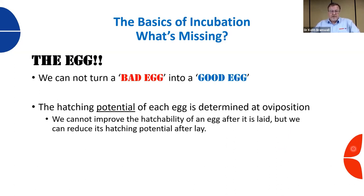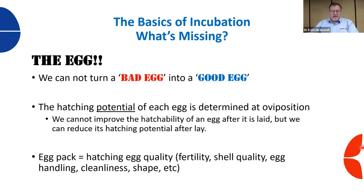The hatching potential of an egg is determined at oviposition, the time it is laid. We cannot improve the hatchability of an egg after it is laid - we can only reduce its hatching potential after lay by how we handle and care for those eggs. Egg pack is basically hatching egg quality - we're looking at cleanliness, egg shape, shell quality, and fertility, which is really the most important thing.